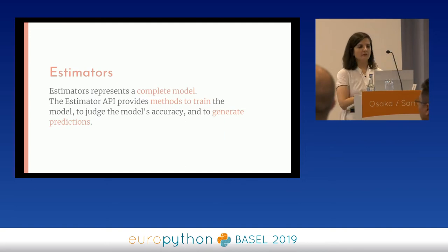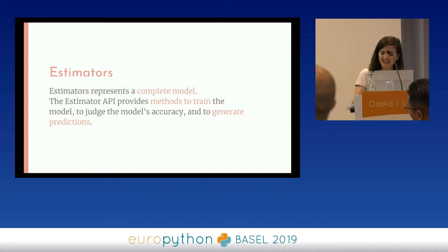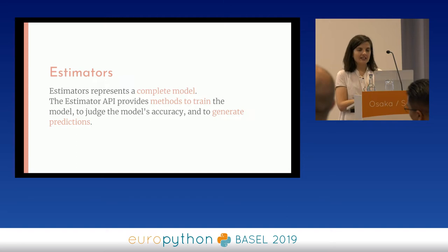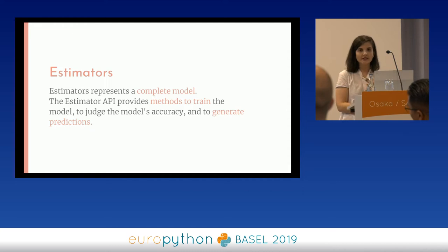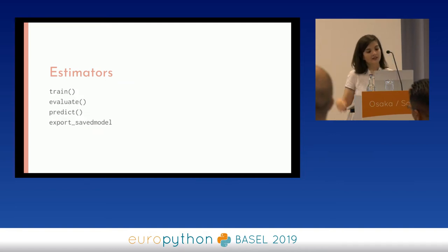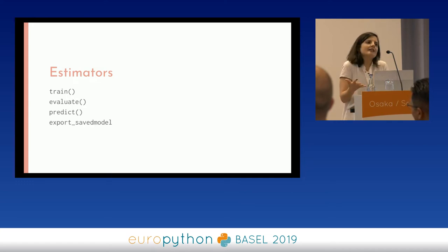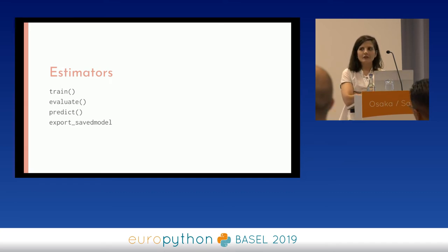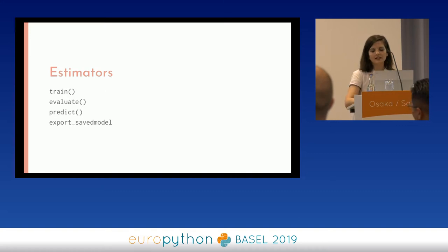An estimator is a complete model. It gives us models for train, for predict, and for evaluate. I'm going to repeat this structure a lot, because it's actually what we want in a machine learning system. The functions we need to instantiate are: train, evaluate, and predict. And save model — because of course you don't want to train your model every single time. I was waiting one week for my model to be trained and then want to use it — that doesn't make sense.